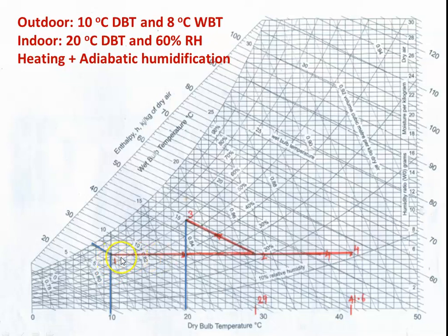Draw a horizontal line from point 1, then draw an inclined line parallel to the enthalpy line using the scale — this meets at point 2. So the process is heating (1 to 2) then adiabatic humidification (2 to 3). During the heating process, temperature rises from 10°C to 29°C. Then during adiabatic humidification, water is sprayed — temperature decreases and moisture content increases.